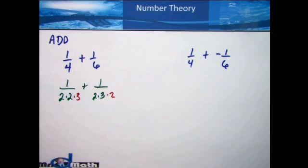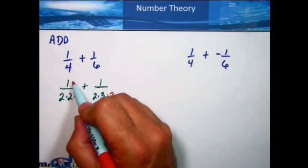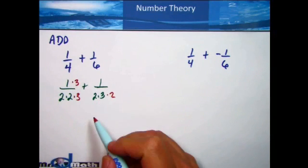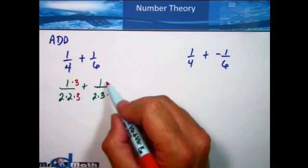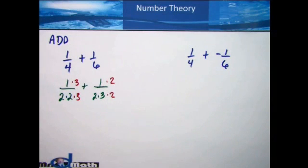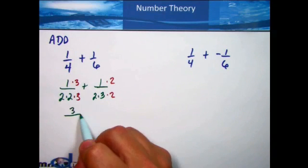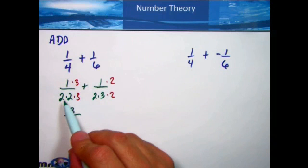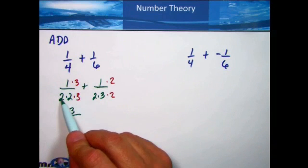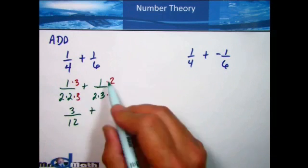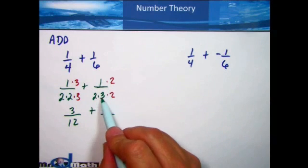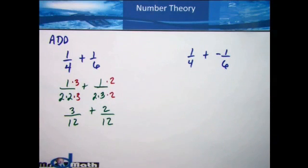One thing about fractions: whatever you do to the bottom number, you've got to do the same thing to the top number. So if I multiply by 3 on the bottom, I multiply by 3 on the top. If I multiply by 2 on the bottom of the second fraction, I have to multiply by 2 on the top. That's going to give me two new fractions. 1 times 3 is 3, and the new denominator is 2 times 2 times 3, which is 12. Now I have created common denominators.